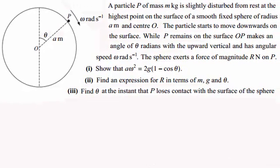Hi. Now here we have an example where we've got a particle moving in a vertical circle on the outside of a sphere. So just to take you through this question, it's got quite a lot of good points which we can discuss throughout the video. We've got this particle P here of mass m kilograms and it's slightly disturbed from rest at the highest point on the surface of a smooth fixed sphere of radius a meters and center O.